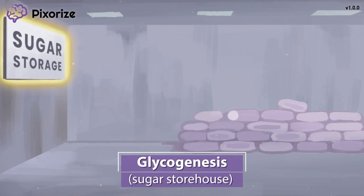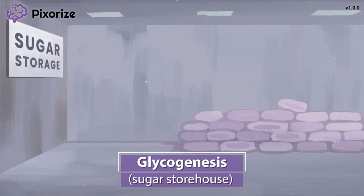Here the sugar storehouse should anchor you to glycogenesis, since glycogenesis generates glycogen, the storage form of glucose.